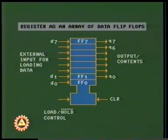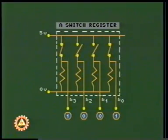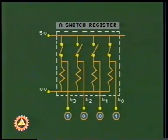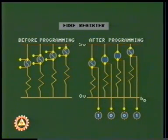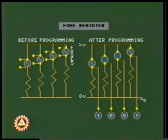A register has a set of data input lines or write lines, a load or write-enable line, and output lines. A simple register may also be built using an array of on-off switches; the setting of the switches decides whether a bit is zero or one — this register is read-only. Another type of read-only register uses electronic fuses in lieu of switches. The content depends on whether a fuse is blown or not; such read-only registers can be programmed only once.